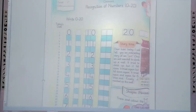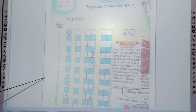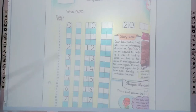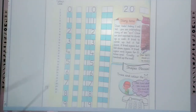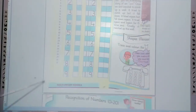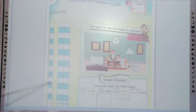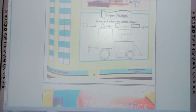Dear students, on page number 17, it's your home task — recognition of numbers 0 to 20. As in our previous lectures we wrote 0 to 10 numbers. With the help of your parents, write the numbers 0 to 20 in the boxes and also read the story with the help of your parents. The next page is also recognition of numbers — it's also your home task to write numbers 0 to 20 with the help of your parents.